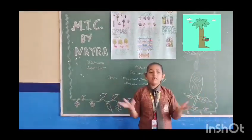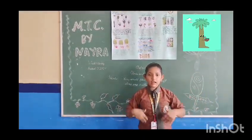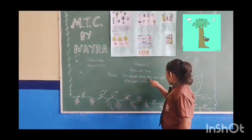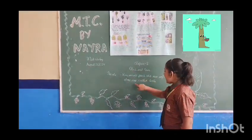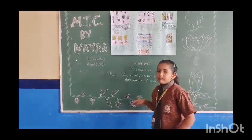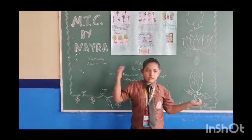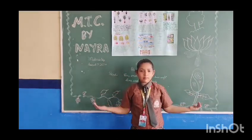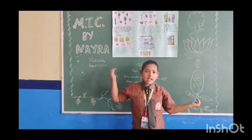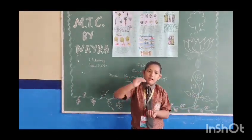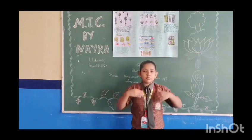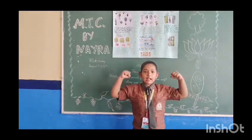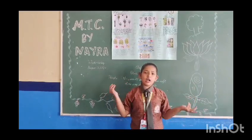Now we will discuss what are herbs. Very small plants that have soft stems are called herbs. Mint and Tulsi are the examples of very small plants. Rose and Jasmine are the examples of small plants. Small plants that have thin and hard stems are called herbs.